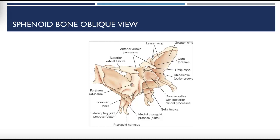Projecting downward from the inferior surface of the sphenoid body are four processes corresponding to the legs of the imaginary bat, which form part of the lateral walls of the nasal cavity. We have the lateral pterygoid, which is lateral with a flat extension; the two medial pterygoids, directly medial to the lateral pterygoid process; and these end inferiorly in the pterygoid hamuli, which are hook-like processes.